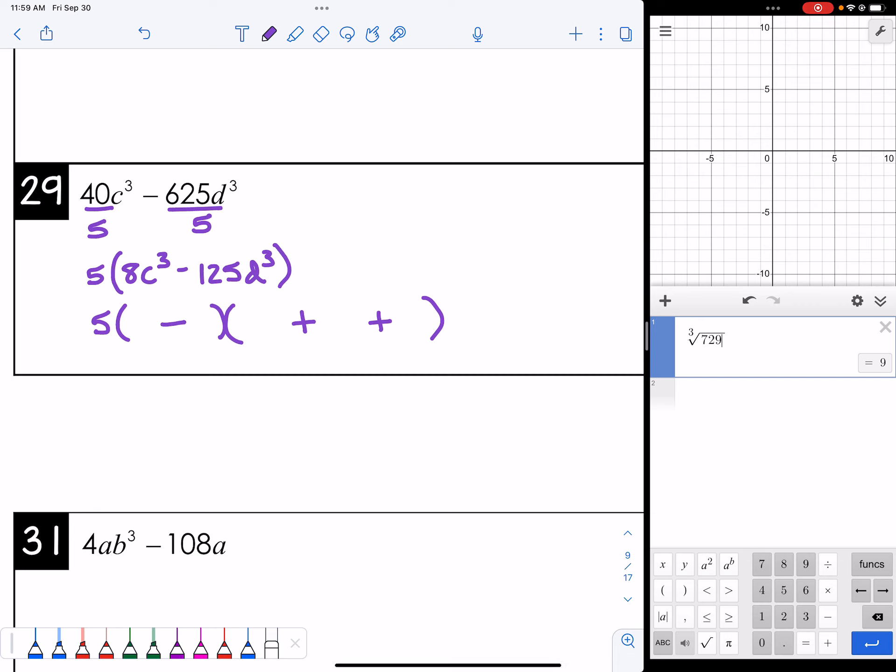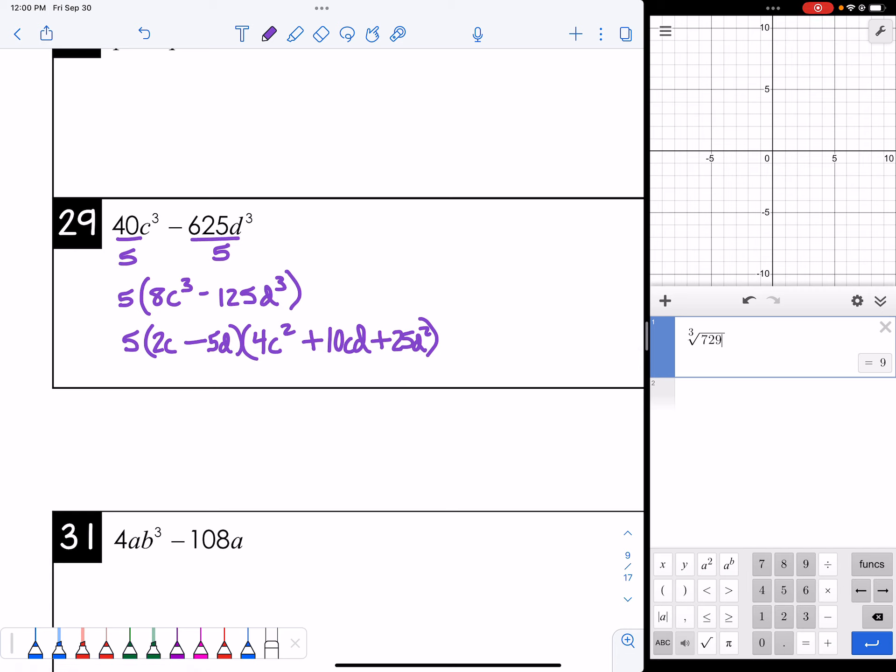The cube root of 8c³ is 2c, and the cube root of 125d³ is 5d. Then square the first term in the binomial to get the first term in the trinomial, which is 4c². Square the last term in the binomial to get the last term in the trinomial, which is 25d². And then multiply these two together and put them in the middle. So that will be 10cd. Alright, so that's it for that one. And hopefully that gets you started on the difference of cubes.